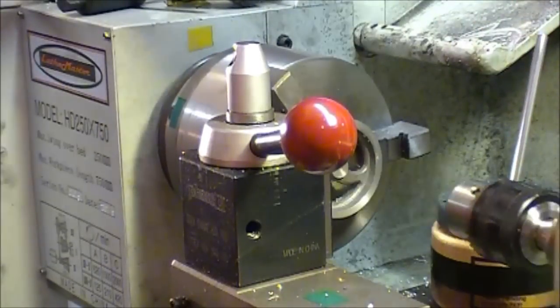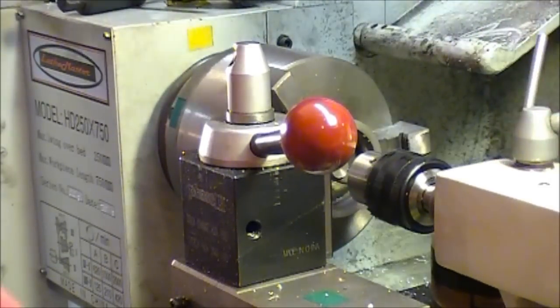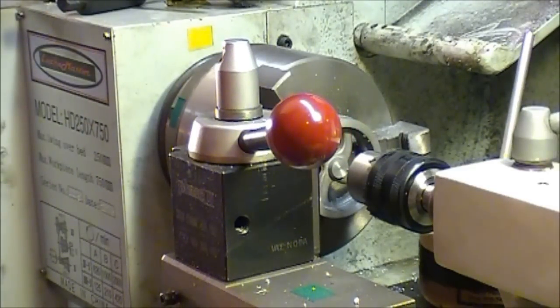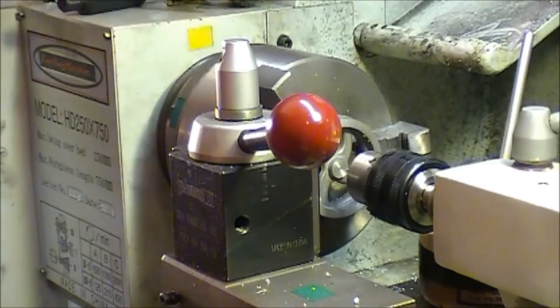So put that in, bring this up on the tailstock, tighten everything down. I'm going to start drilling the hole for the axle.